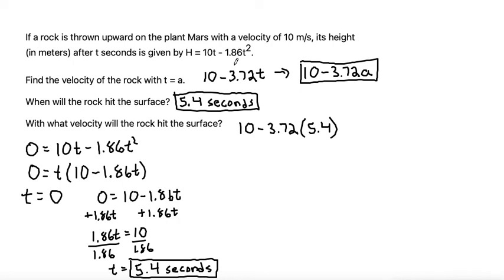So, multiplying that out, 5.4 times 3.72 is 20.088. So it would be 10 minus 20.088, which is negative 10.088. Let's round that to negative 10.1. And remember that velocity has a unit of meters per second.